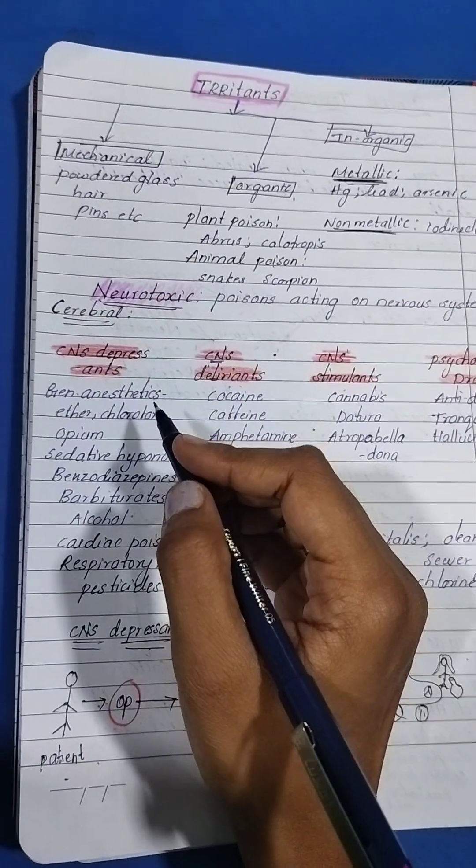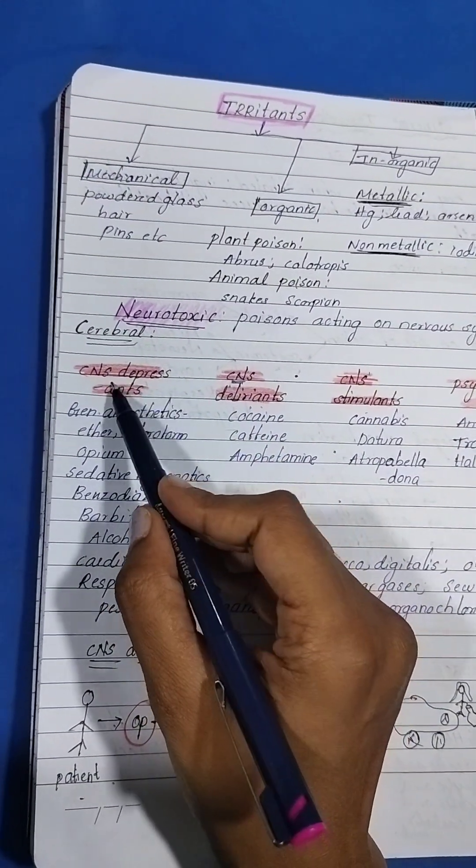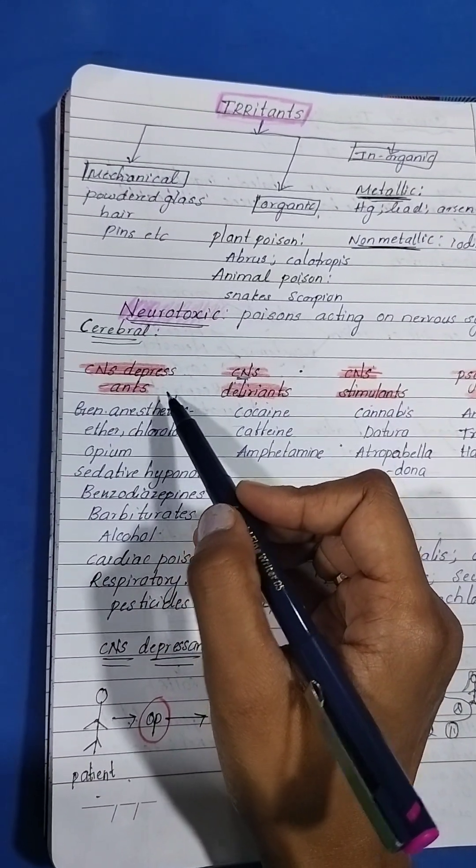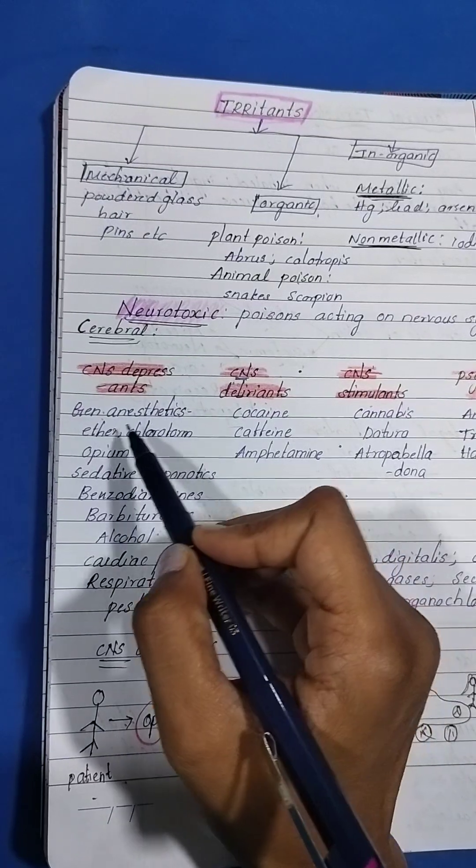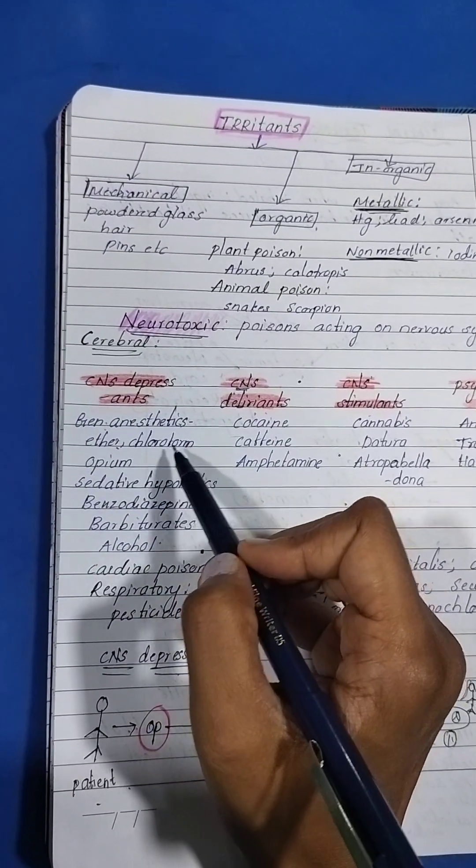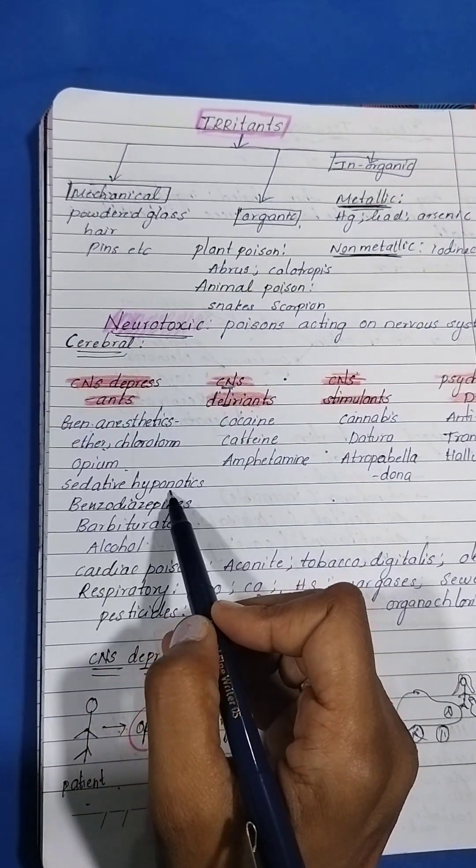Under CNS depressants, these drugs cause depression of the CNS, central nervous system, like general anesthetics like ether, chloroform, opium, sedative hypnotics,